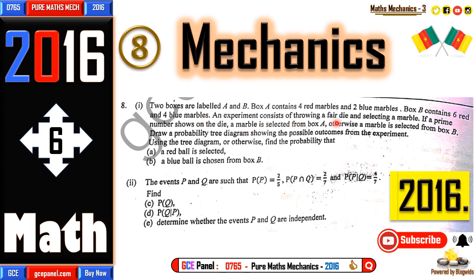An experiment consists of throwing a fair die and selecting a marble. If a prime number shows on the die, a marble is selected from box A; otherwise a marble is selected from box B. Draw a probability tree diagram showing the possible outcomes. Using the tree diagram or otherwise, find the probability that: (a) a red ball is selected, and (b) a blue ball is chosen from box B.